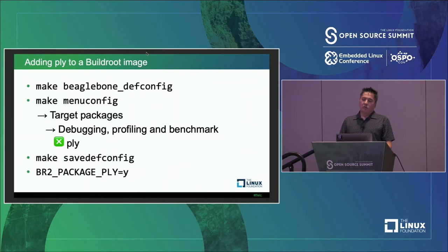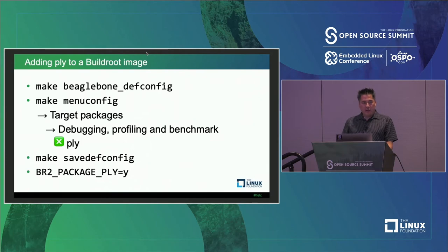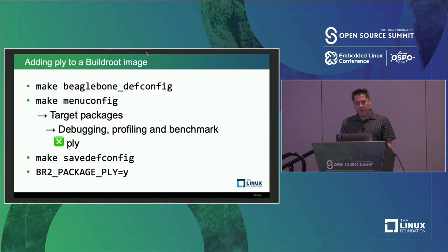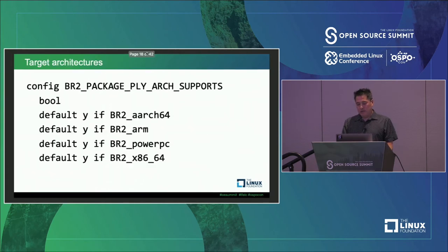Adding Ply to the Buildroot image is straightforward — it's already in the release. You simply go into menuconfig for the root filesystem, drill down into target packages, go into debugging, profiling, and benchmark, select the Ply package, save the defconfig, and that last line will be added to your defconfig for the image.